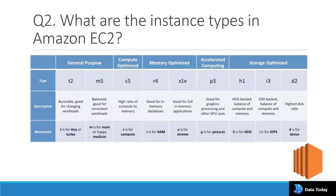Another question is: what are the instance types you can launch with Amazon EC2? Various options are available: general purpose, compute optimized, memory optimized, accelerated computing, and storage optimized. In the free tier you will get t2.micro.